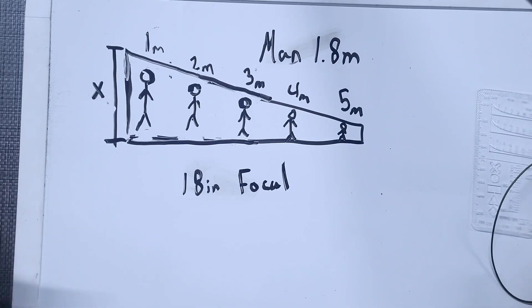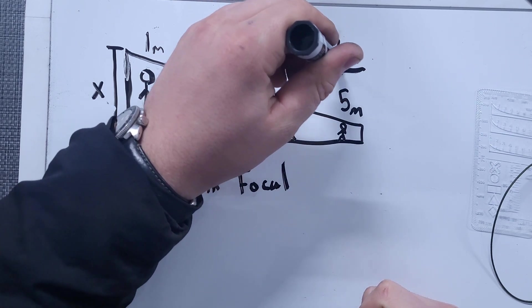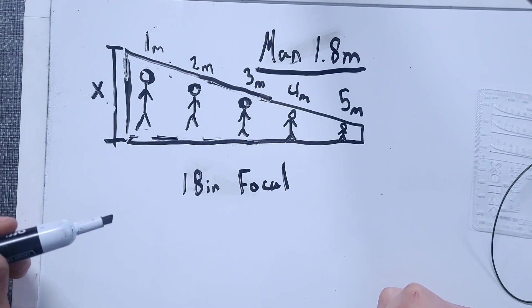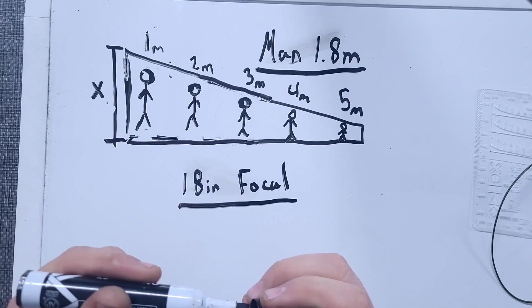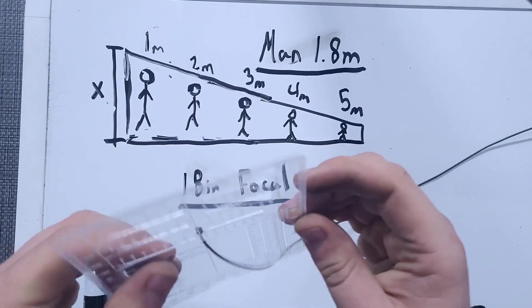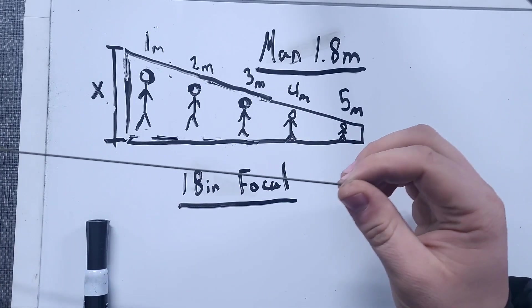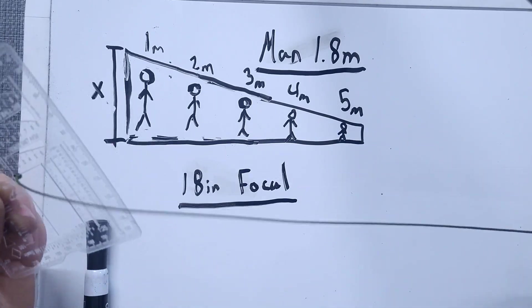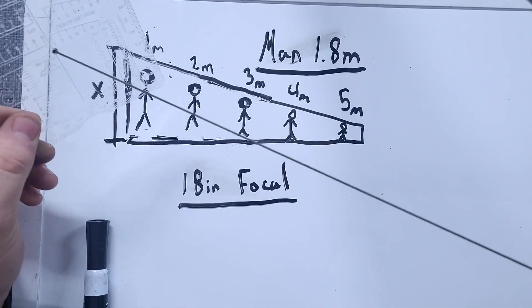With the Ranger card, we have three known variables. We have the height of the object that we're ranging. We have an 18-inch focal distance, which is the 18-inch string that you hold in your teeth when you hold the Ranger card out in front of you.